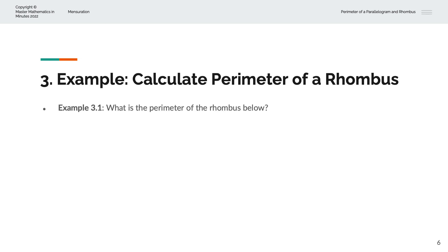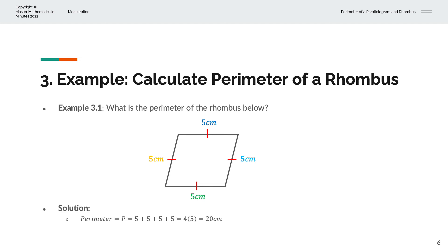In the third example, we're asked to calculate the perimeter of the rhombus below. This is a rhombus of sides 5 centimeters. And so the perimeter P equals 5 plus 5 plus 5 plus 5, or 4 times 5, and that equals 20 centimeters.